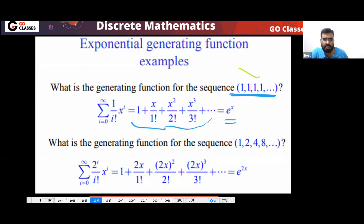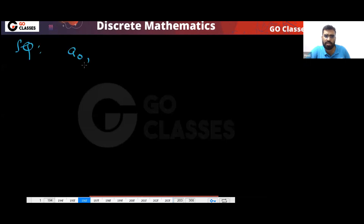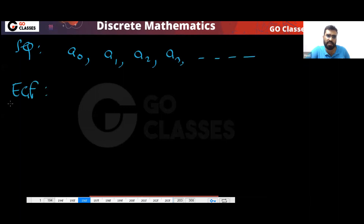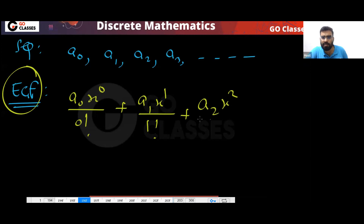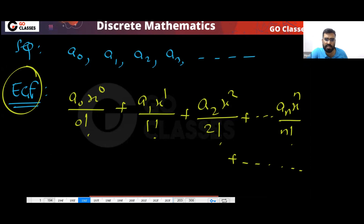So the exponential generating function for a sequence a0, a1, a2, a3, ... is defined as: a0·x⁰/0! + a1·x¹/1! + a2·x²/2! + ... This is similar to the ordinary generating function, but we divide each term by n factorial. That is your exponential generating function.